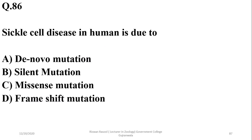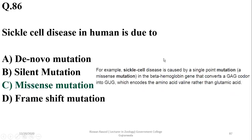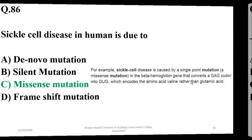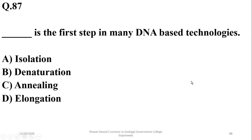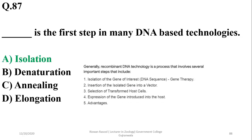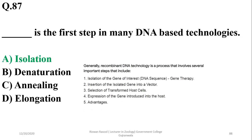Question 85: Sickle cell disease in humans is due to a missense mutation — a single point mutation in the beta hemoglobin gene. Question 86: The first step in many DNA-based technologies is isolation — first DNA is isolated and then further processing occurs.